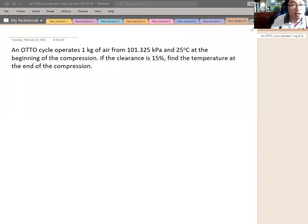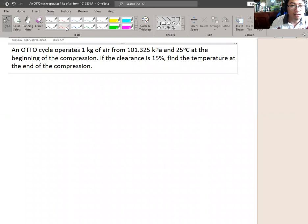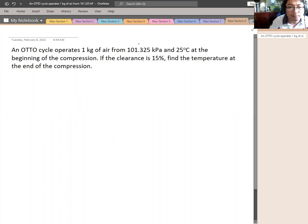So we will take it from the beginning of the compression, we will take this as P1 and T1. If the clearance is 15%, find the temperature at the end of the compression. So we will find T2.